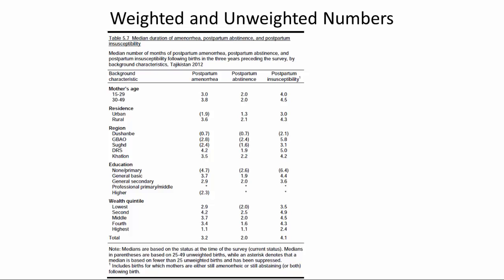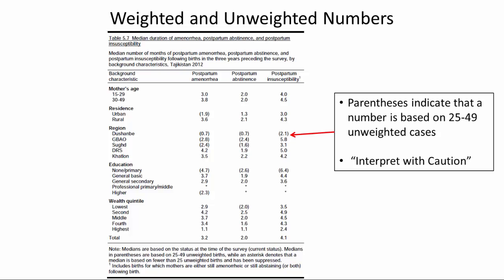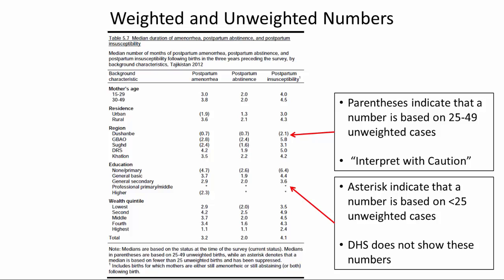To help you assess the sample size, the tables in the final report use certain symbols to indicate if the number of unweighted cases is too small to be considered reliable. For indicators that are percentages, parentheses indicate a number is based on 25 to 49 unweighted cases, meaning it should be interpreted with caution. An asterisk indicates a number is based on fewer than 25 unweighted cases, which is too small to be reliable, so DHS tables do not show these numbers at all.